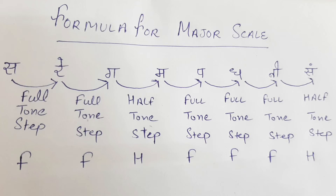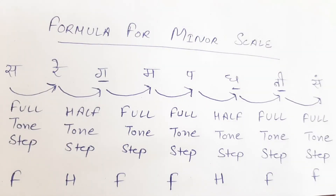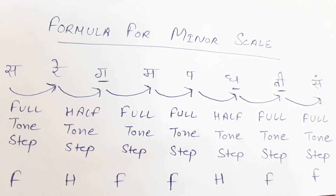Ab dekhte hain Minor Scale find out karne ka formula. Jaisa maine aapko bataya tha ki Minor Scale mein Ga, Dha, aur Ni svar komal use hote hain. To formula hai: Sa se Re pe jaane ke liye Full Tone step, Re se Ga pe jaane ke liye Half Tone step, Ga se Ma Full Tone step, Ma se Pa Full Tone step, Pa se Komal Dha Half Tone step, Komal Dha se Komal Ni Full Tone step, Komal Ni se Taar Sa Full Tone step. Isko dekhte hain harmonium pe.